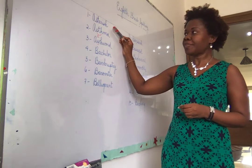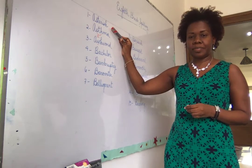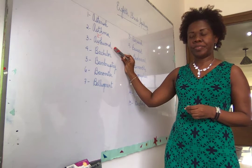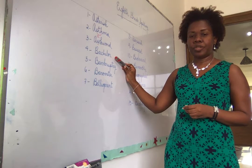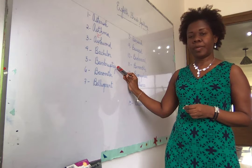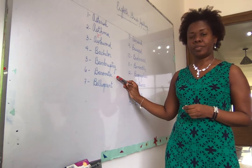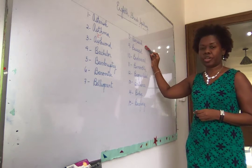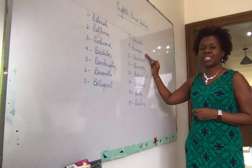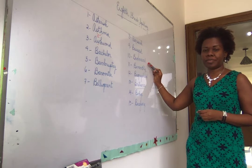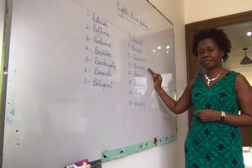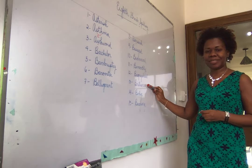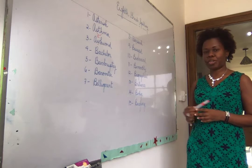So repeat after me: Asterisk. Asthma. Awkward. Bachelor. Bankruptcy. Barometer. Belligerent. Berserk. Besieged. Biannual. Bimonthly. Biographical. Brilliance. Budge. Burglary.